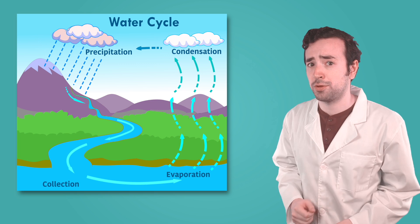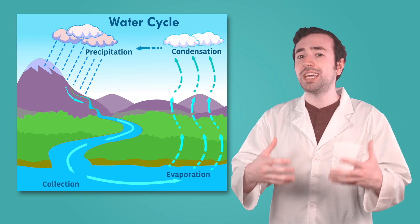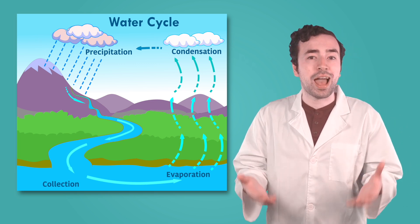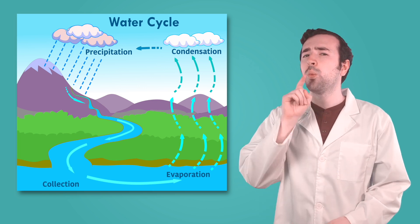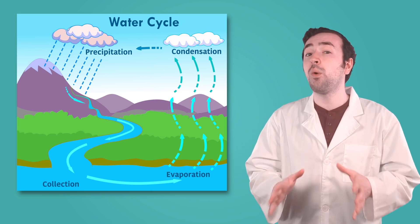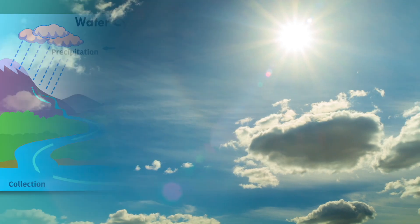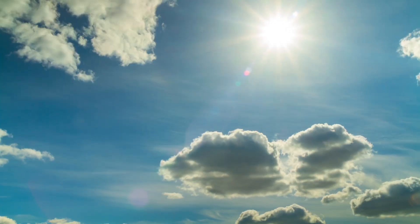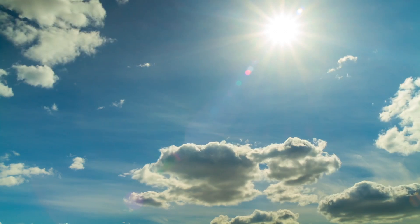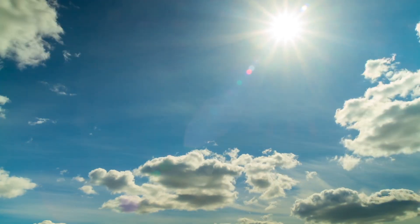Think back to the water cycle for a second. Before precipitation can happen, water has to evaporate or turn into water vapor. What warms up the water enough for it to evaporate? The sun. Heat from the sun is the energy source that powers not just the water cycle, but all the weather we see on Earth.